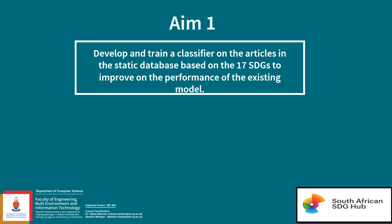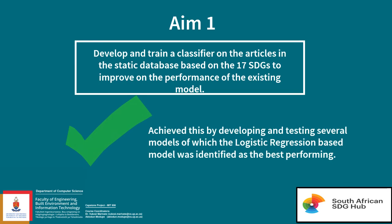The first aim was to develop a classifier based on a static database of classified article abstracts provided by the SA SDG Hub. This was achieved with the logistic regression-based classifier performing the best. Some articles were classified into more than one SDG and were therefore excluded, limiting the number of articles used to train the classifier.